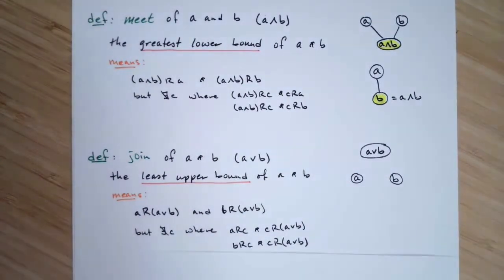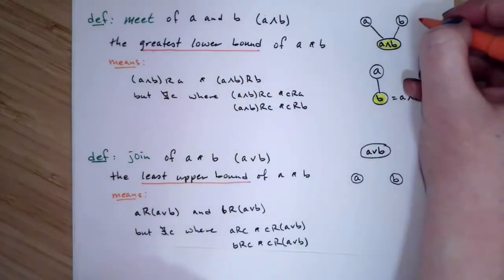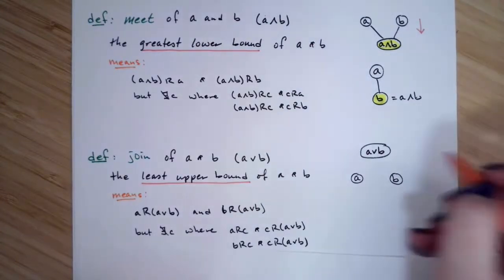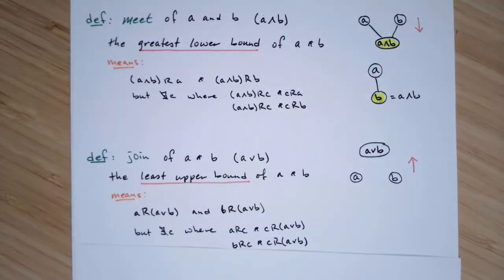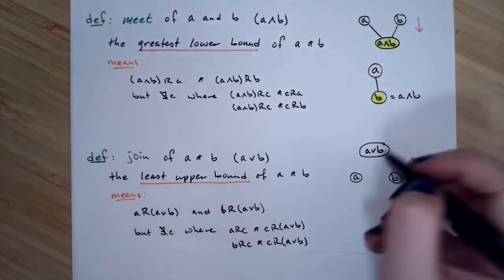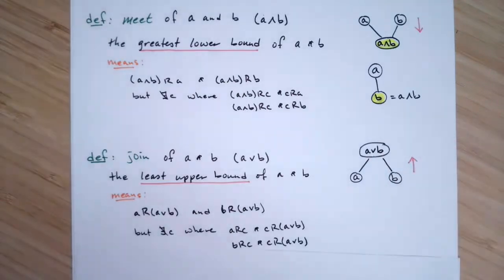when you travel up the Hasse diagram, so before we were traveling down the Hasse diagram to get the meet, for the join, when you travel up the Hasse diagram to get to the join, it's the first element that you can come to in common or the first element that you reach from either A or B.